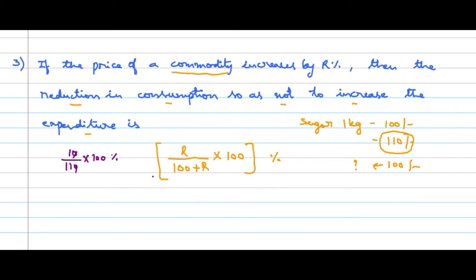Same thing in the opposite fashion: if the cost has been reduced by R percent, then the increase in consumption will be equal to R divided by (100 − R) into 100 percent. These are the commodity type of problems.